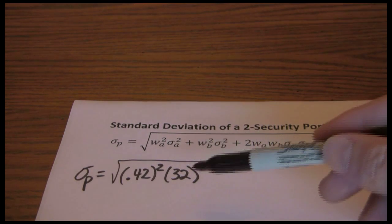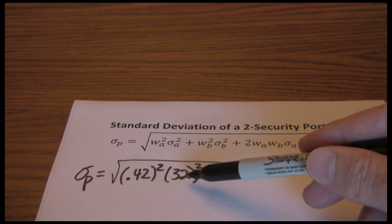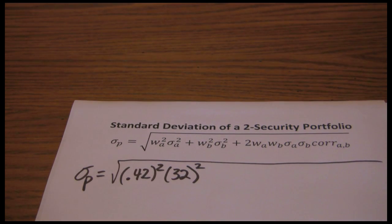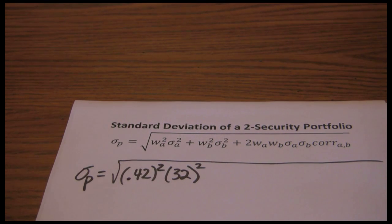Now notice when I plug in 32%, I'm not putting it as .32, I'm just plugging in as 32. You can do either way, just be consistent. If you plug it in as .32, convert your percentages to a decimal. Do that for every standard deviation. What I find much easier is to just leave it as 32, not convert it to a decimal. That gives me less decimals to worry about at the end of the problem as well.